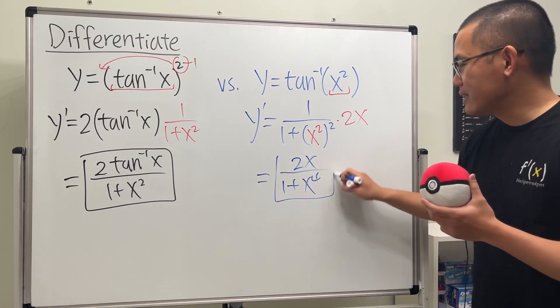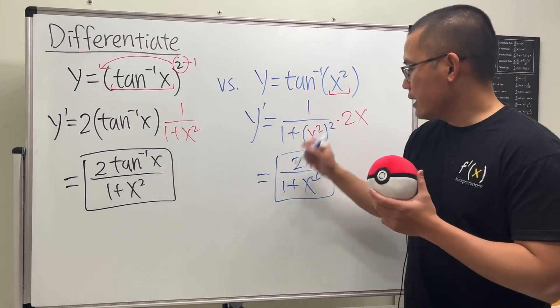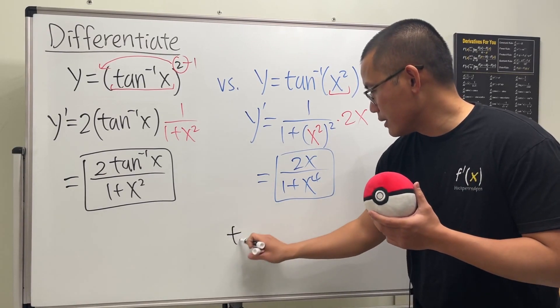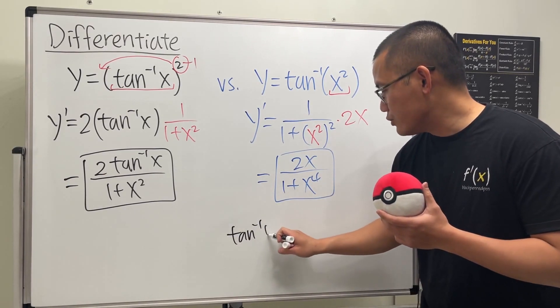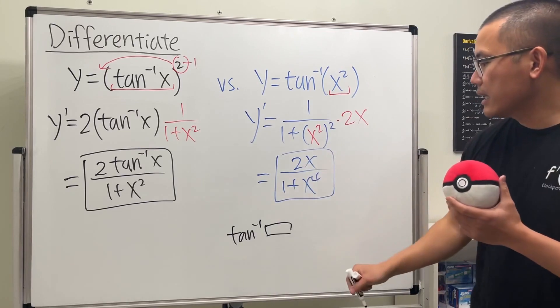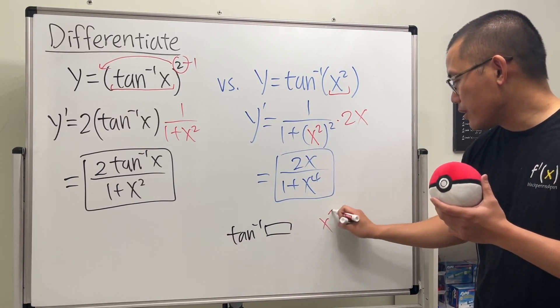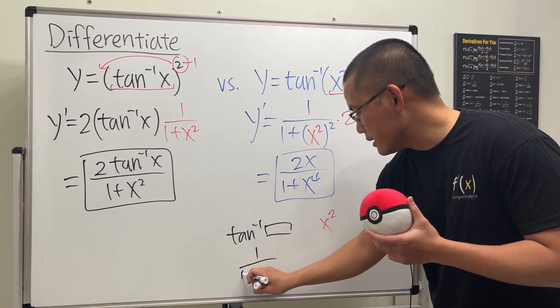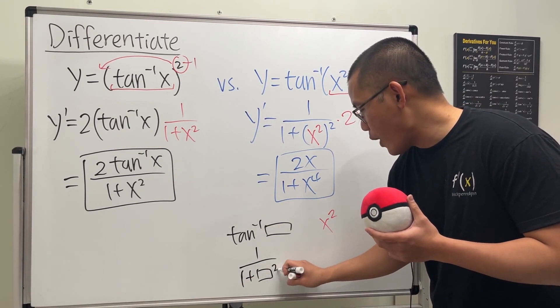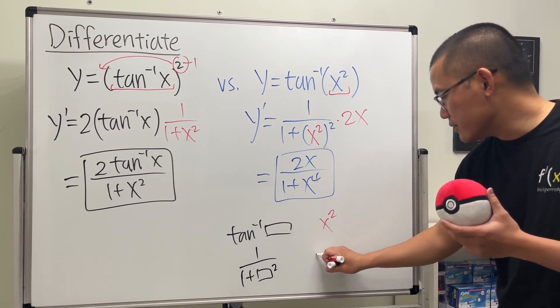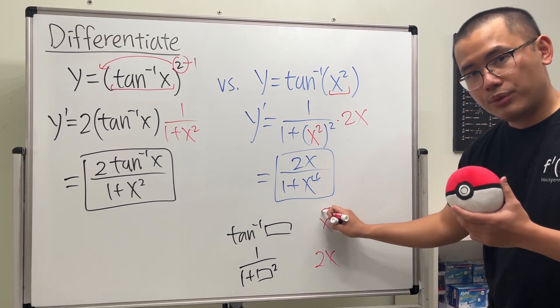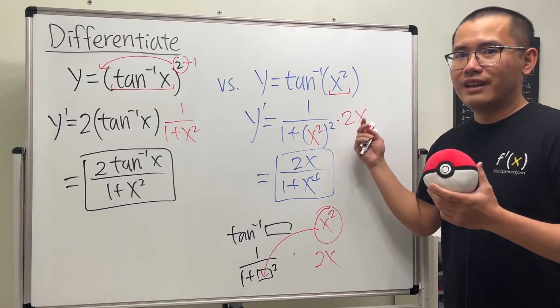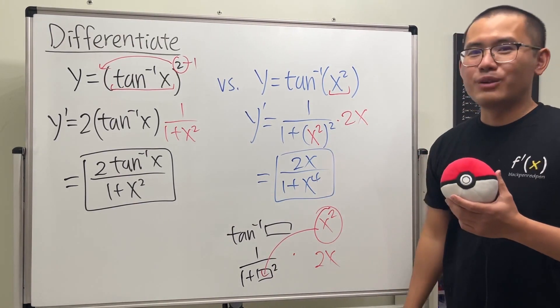Just real quick again - when we have inverse tangent of a box, right, just like that, and inside the box we have x squared, what do we do? The derivative of this is one over one plus box squared, and then the derivative of this is 2x. Now we put this in the box and then multiply, and that's how we got this right here. Then of course just clean things up and that'll be it.